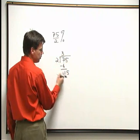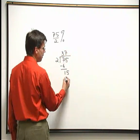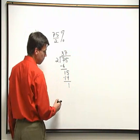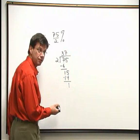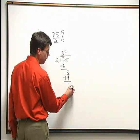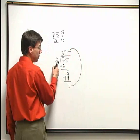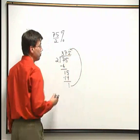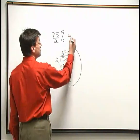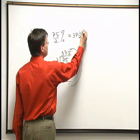Bring down the 5. 2 goes into 15 7 times. 7 times 2 is 14. Subtract. I get 1. Now, that's the remainder in my long division. If I'm going to write my remainder in fraction form, this remainder goes up on top over the number in front, the 2. 37 and a half. So 75 halves percent is 37 and a half percent.